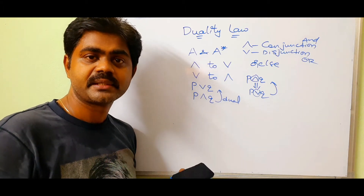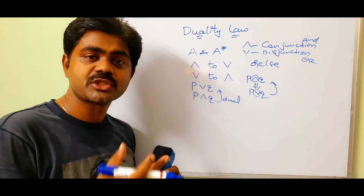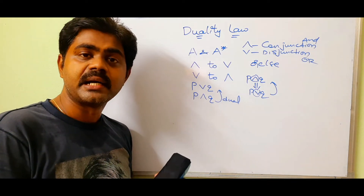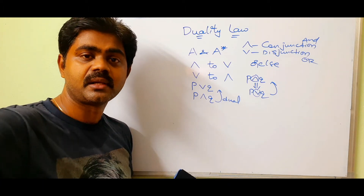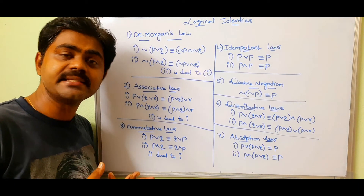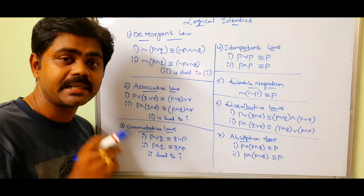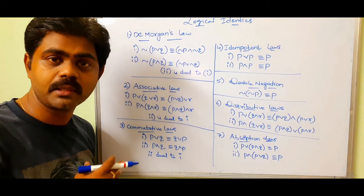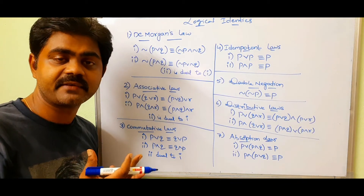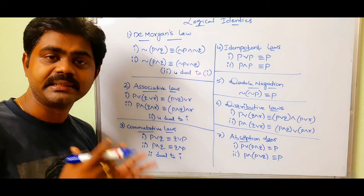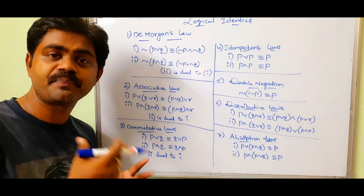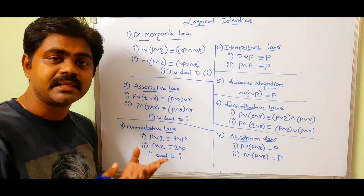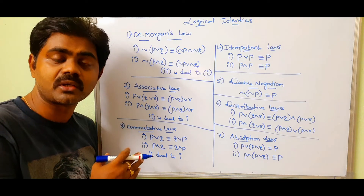We will see logical identities which follow duality principle, and remember these logical identities are most important — you should remember them. Why? Because in future videos we will solve some problems like DNF and CNF, that means normal forms — Disjunctive Normal Form and Conjunctive Normal Form — and there we should use all these identities to reduce and solve our problems. In examination they may also ask you to prove that De Morgan's law is logically equivalent.